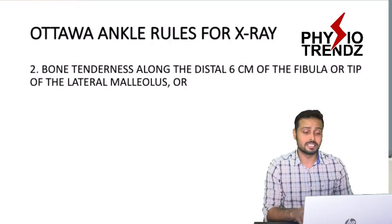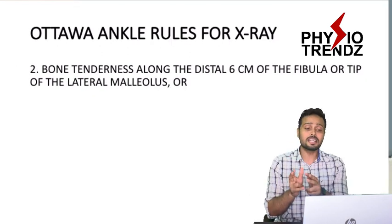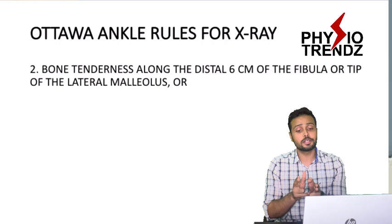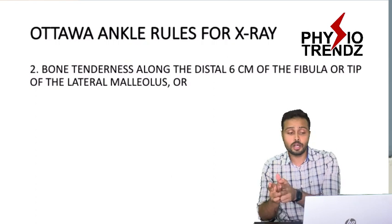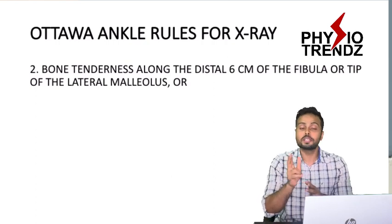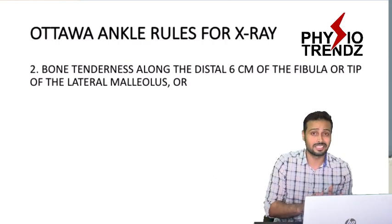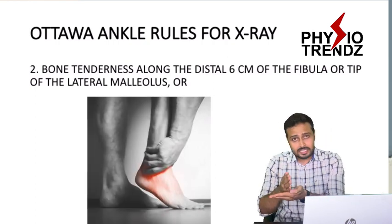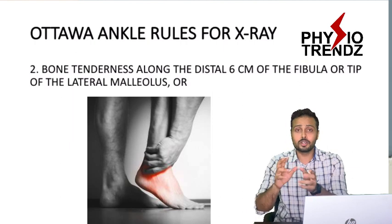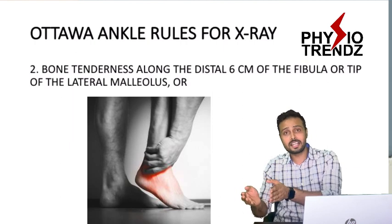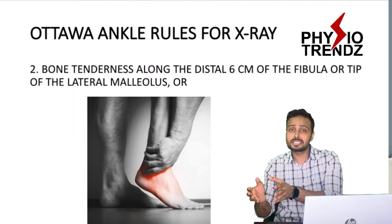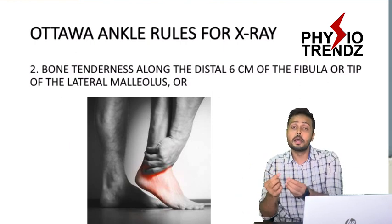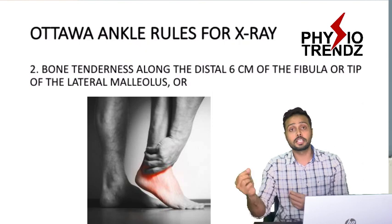The second criterion is bone tenderness along the distal 6 centimeters of the fibula or the tip of the lateral malleolus. This is the same concept applied to the lateral side, as the fibula forms the lateral malleolus.